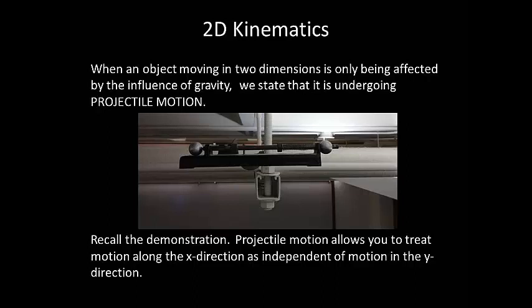We found this to be true because projectile motion allows you to treat motion along the x direction as independent of the motion along the y direction. So both of them were being pulled down by gravity at the same rate and therefore hit the ground at the same time since they both started out with an initial velocity in the y direction of zero.